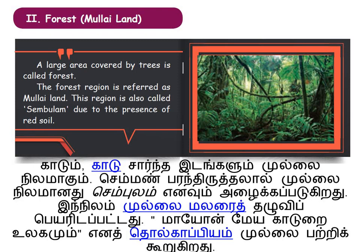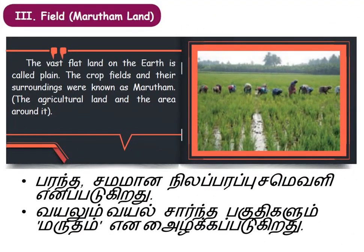Another name for Mullai land is Sembulam, because of the presence of red soil — the soil is red in color there. Apart from mountains and forests, you have flatlands called plains, which are ideal for growing crops. The crop fields and their surroundings were known as Marudam. The Marudam land soil was alluvial and red soil, which was very good for growing crops.